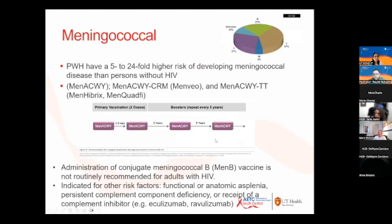Moving on to individual vaccines — meningococcal. People with HIV have a 5 to 24-fold higher risk of developing invasive meningococcal disease. Most cases involve the four strains covered in the quadrivalent vaccine: A, C, W, and Y. There is a proportion of serogroup B not included in the vaccine, and guidance does not recommend it for all persons with HIV. The series is two primary doses eight weeks apart, followed by a booster.